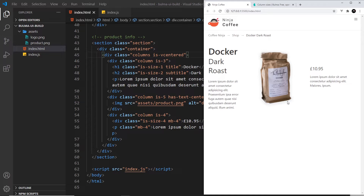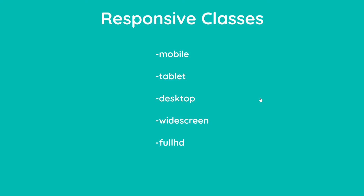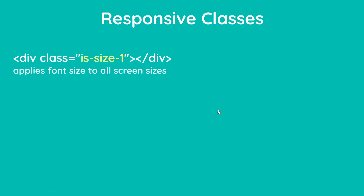Bulma gives us a way to apply certain classes at different screen widths by using responsive class suffixes. These suffixes are: hyphen-mobile, hyphen-tablet, hyphen-desktop, hyphen-widescreen, and hyphen-full-hd. We can add them onto the end of some Bulma classes to style things a little bit differently at different screen sizes. For example, if I use the class `is-size-1` on an element, it will automatically apply that font size at all widths.